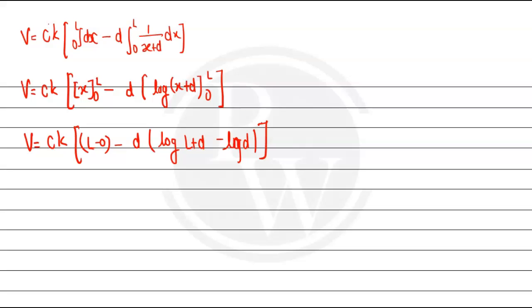So V's value may be CK times, in brackets, L minus D. You can write log L minus log D, so this becomes log of L plus D divided by D.